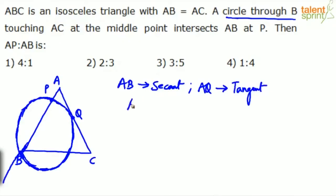If AB is a secant and AQ is a tangent, then one property from circles holds true: AP multiplied by AB equals AQ squared. The length of the tangent squared equals AP into AB, where P and B are the two points where the secant from A cuts the circle.